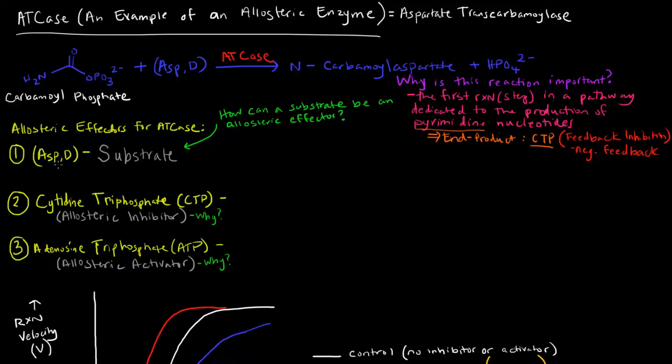So the allosteric effectors for ATCase. The first one is aspartate. Why is it an allosteric effector for ATCase? Well, it's a substrate. Now, I thought allosteric effectors had to be activators or inhibitors. How can they be substrates? How can a substrate be an allosteric effector? Well, if you recall, this substrate binds cooperatively. That's what hemoglobin and oxygen did. Oxygen was an allosteric effector of hemoglobin because it would bind at one location and the affinity at the other subunits would increase for oxygen. Same idea here with aspartate. Aspartate is the substrate for ATCase and it actually binds to ATCase cooperatively. So once one aspartate binds, the other subunits on ATCase will have a higher affinity for those aspartates.